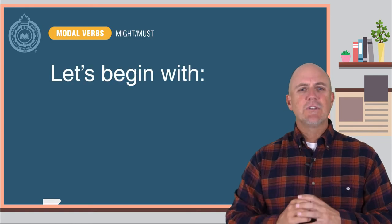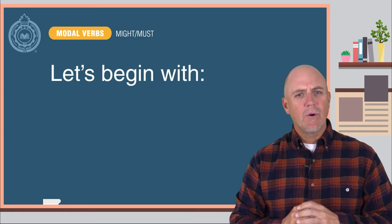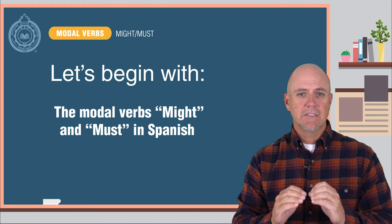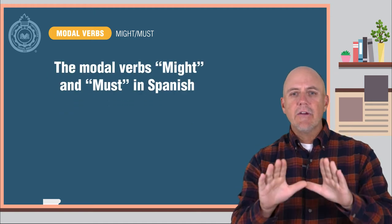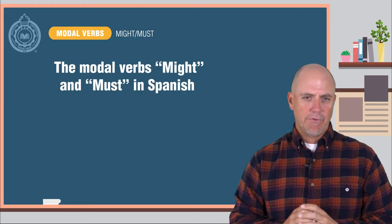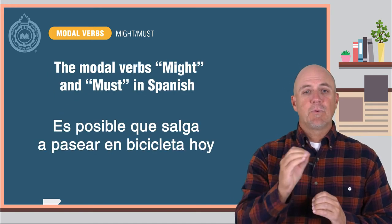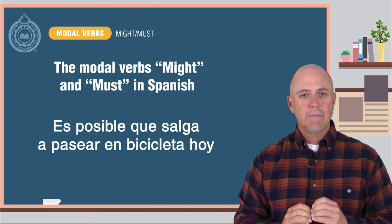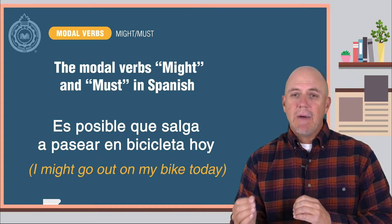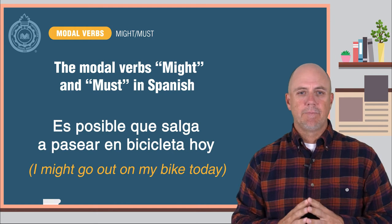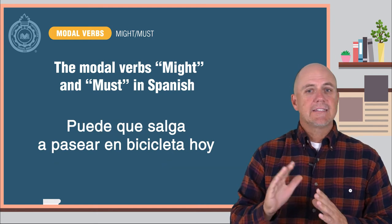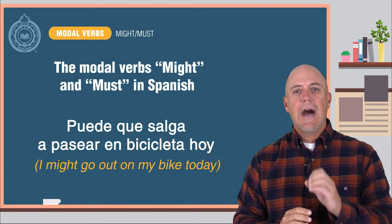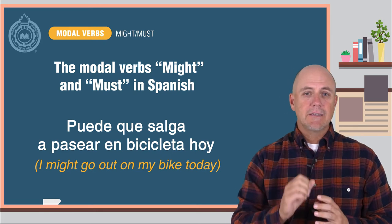Let's begin with what you already know about how to use the modal verbs might and must in Spanish. Here are some examples. ¿Es posible que salga a pasear en bicicleta hoy? I might go out on my bike today. ¿Puede que salga a pasear en bicicleta hoy? I might go out on my bike today.